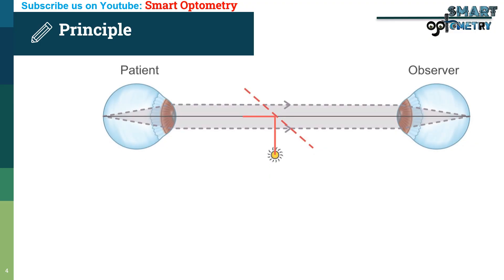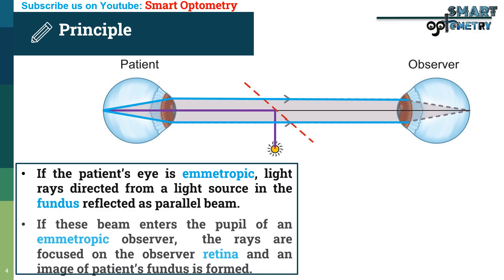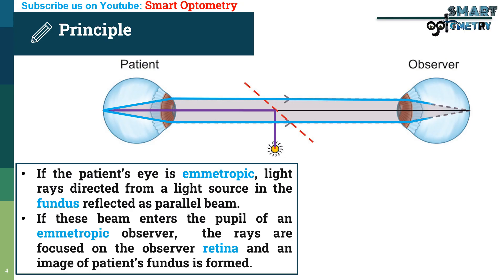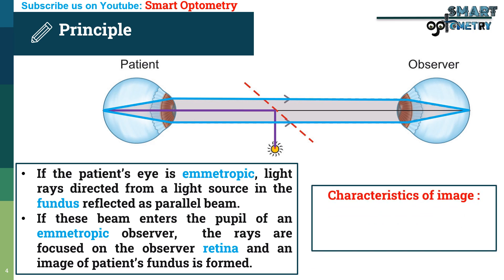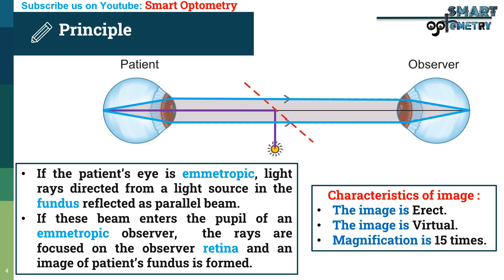Principle of the direct ophthalmoscope: if the patient's eye is emmetropic, then light rays directed from a light source to the fundus are reflected as a parallel beam. If this beam enters the pupil of an emmetropic observer, the rays are focused on the observer's retina and an image of the patient's fundus is formed. The image formed is erect, virtual, and 15 times magnified.